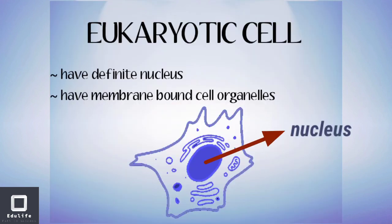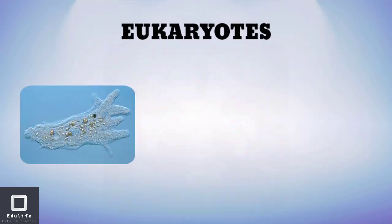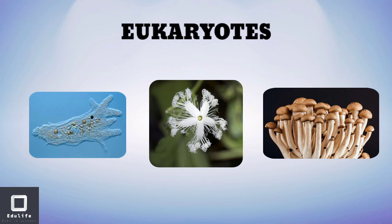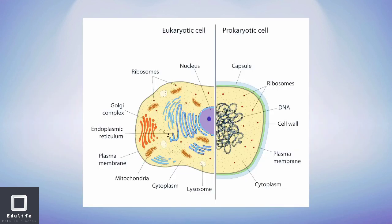Eukaryotic cells are more complex. The chromatin material is enclosed by a nuclear membrane, and they have a definite nucleus. This type of cells are called eukaryotic organisms or simply eukaryotes. Prokaryotes and eukaryotes have many basic differences.